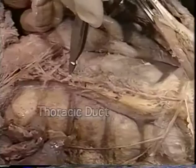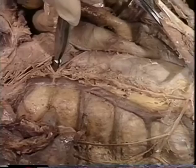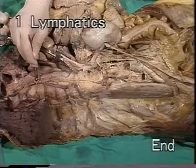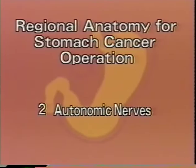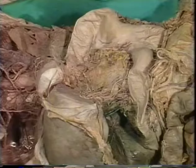The thoracic duct then ascends between the thoracic aorta and the azygous vein. The basic abdominal lymphatics have been demonstrated. Before observing the celiac plexus, we will first examine the anterior vagus trunk, a parasympathetic component.